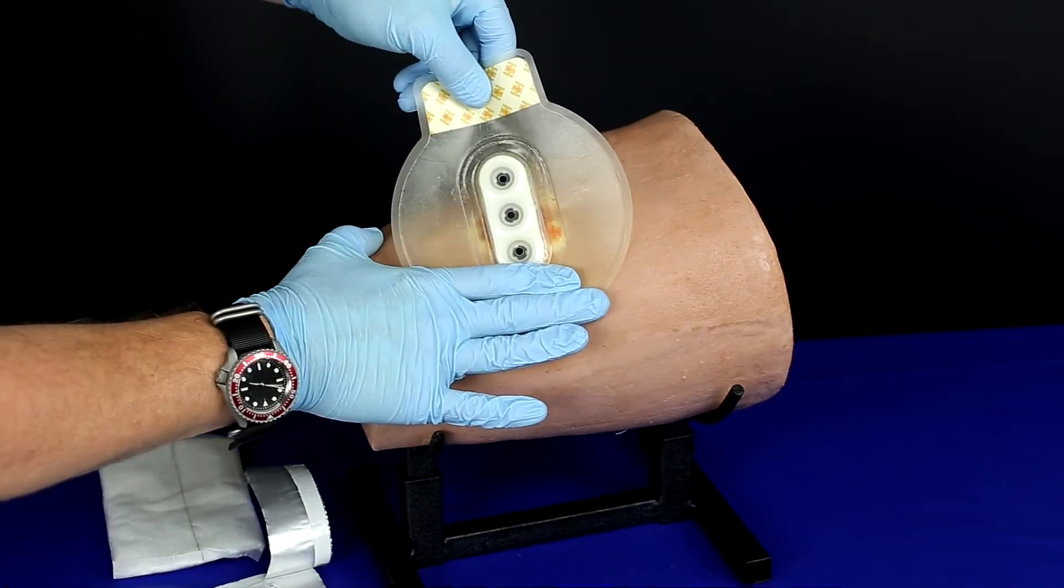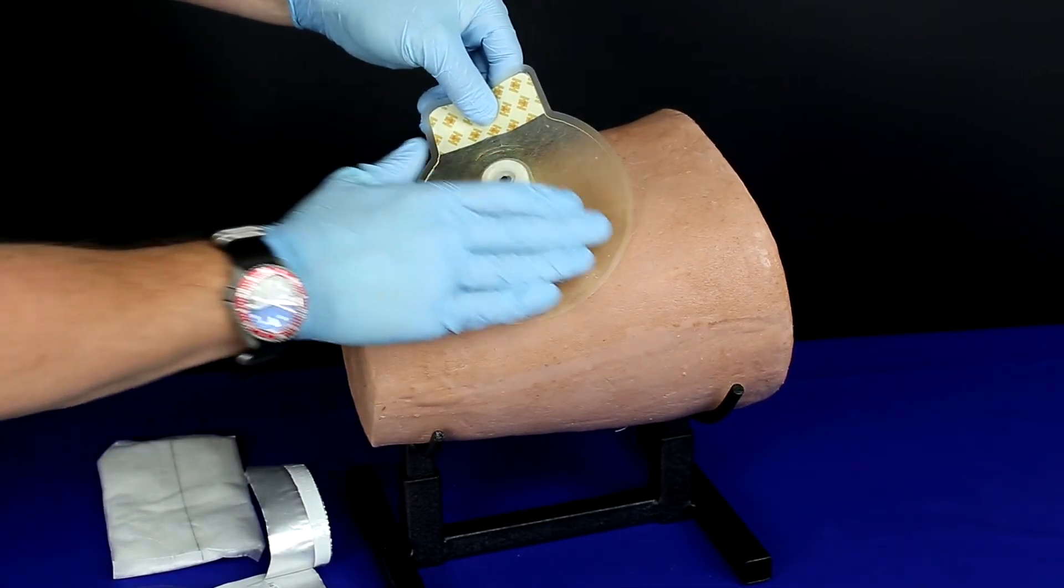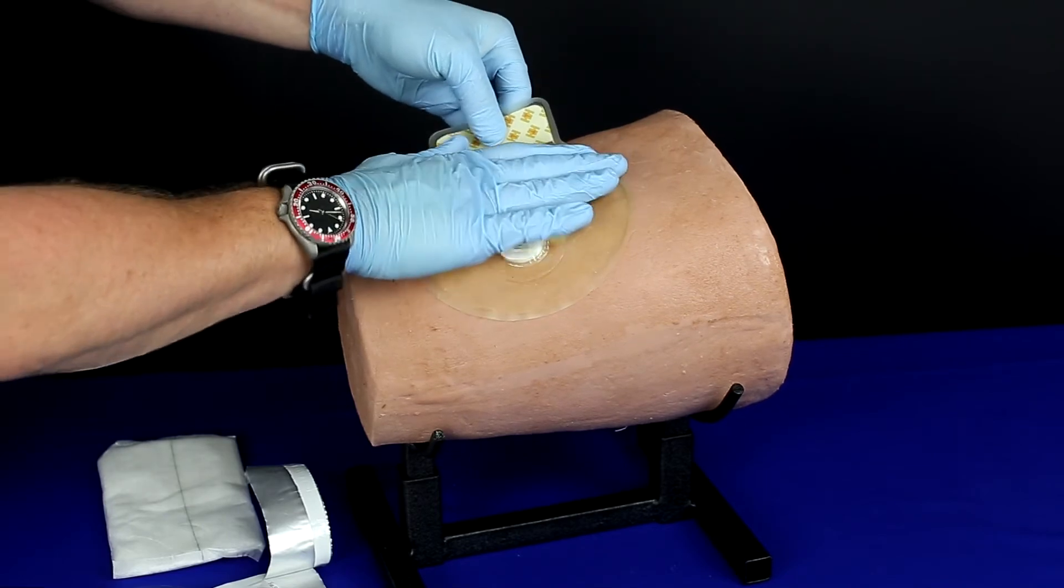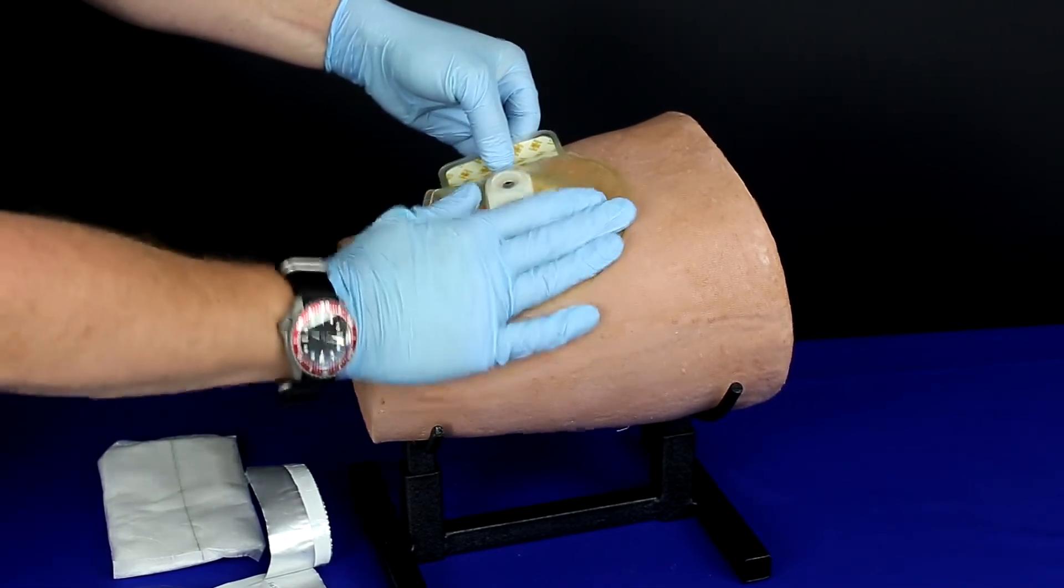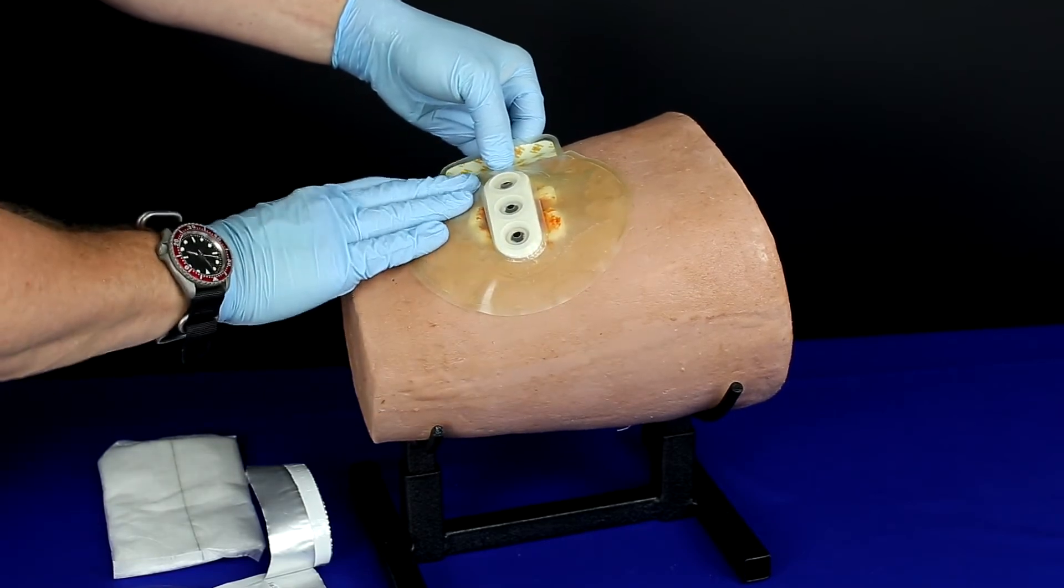Starting on one side of the wound, place the BCS against the skin and press firmly. Apply pressure as the seal comes into contact with the skin to ensure full adhesion. Place the valves directly over the wound site.